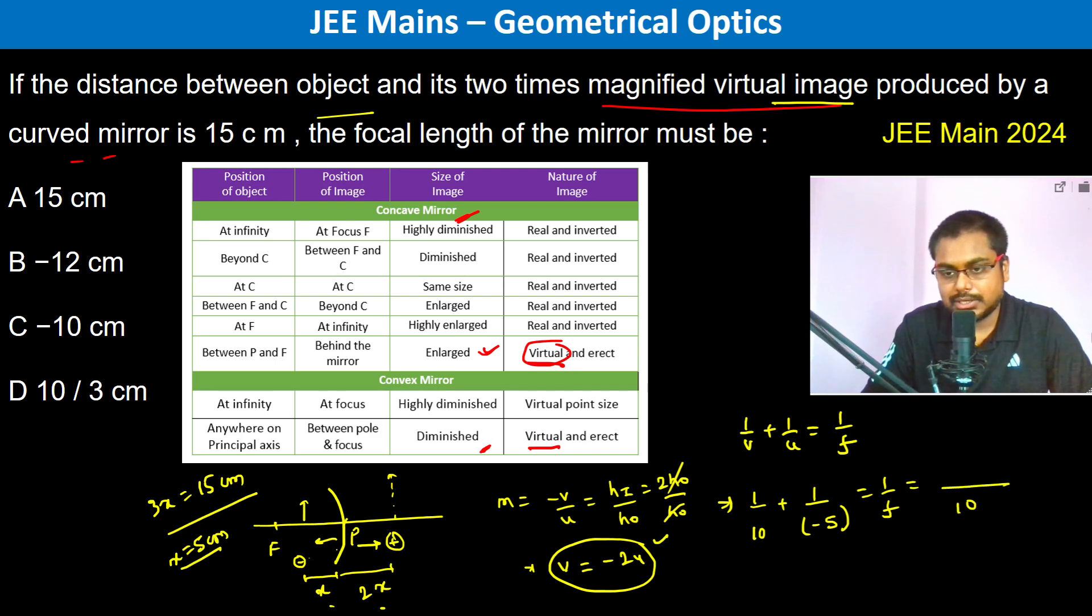So this becomes 1 by 10, this is minus 2 by 10, so therefore F becomes minus 10 centimeters. Therefore C is going to be the answer. Thank you.